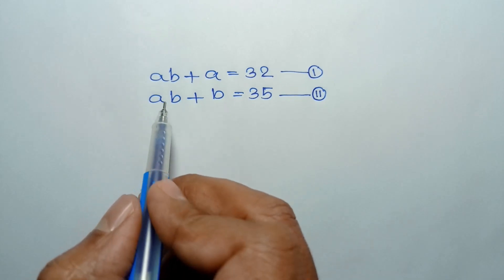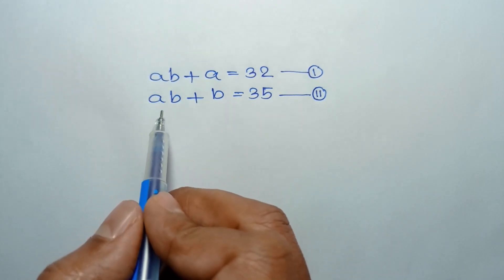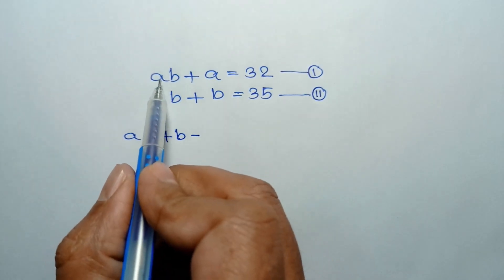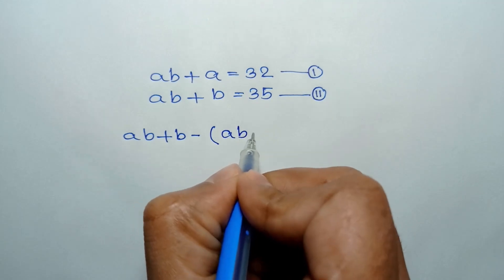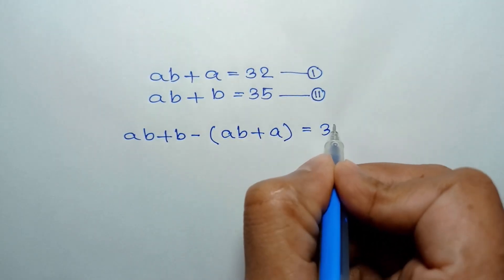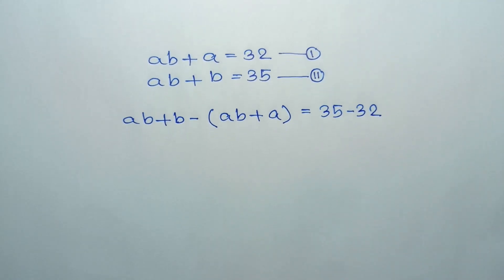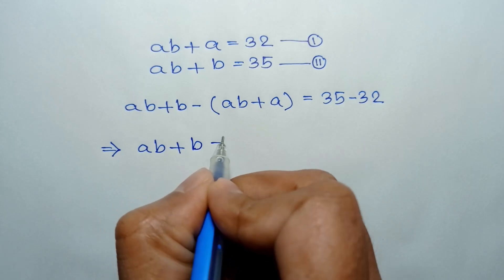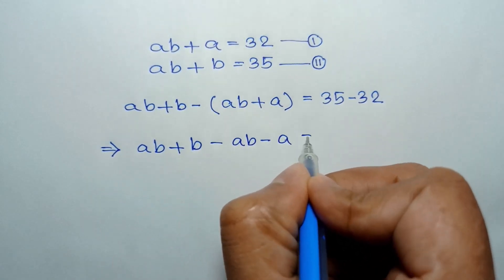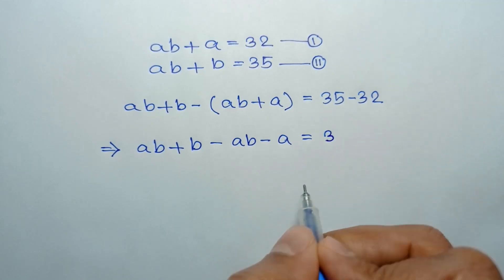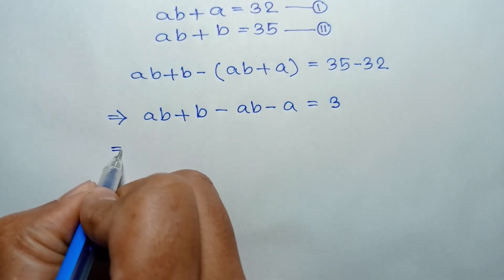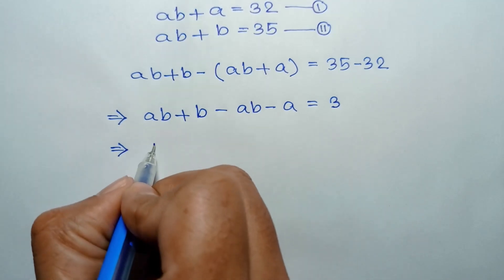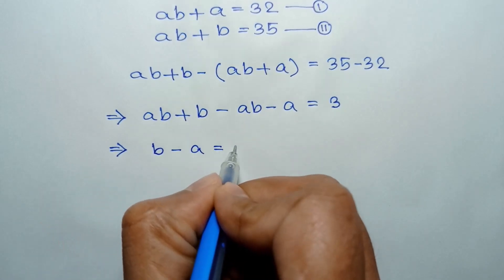If we subtract equation 1 from equation 2, we can write: from equation 2, AB plus B, minus from equation 1, AB plus A, is equal to 35 minus 32. Or AB plus B minus AB minus A is equal to 3. This AB and negative AB will cancel out, leaving B minus A is equal to 3.